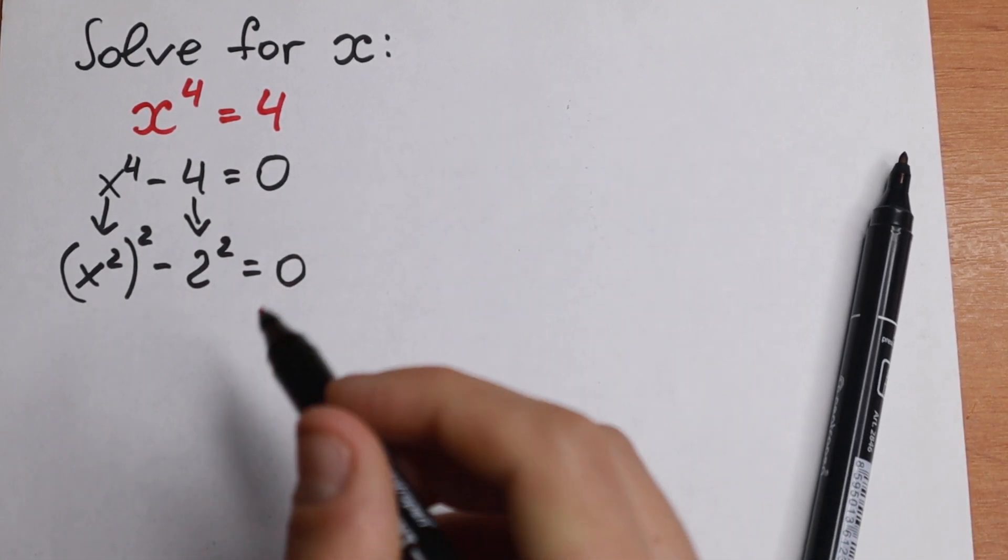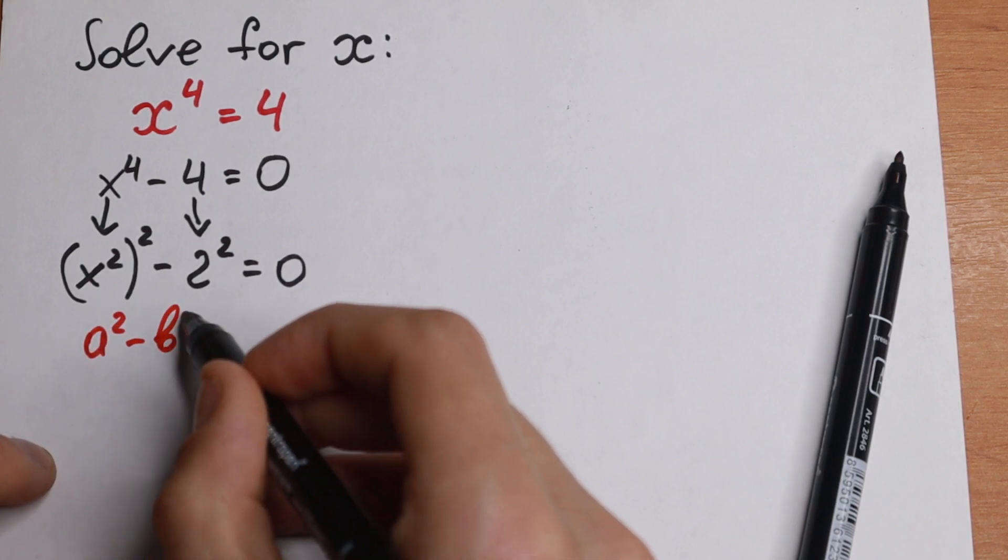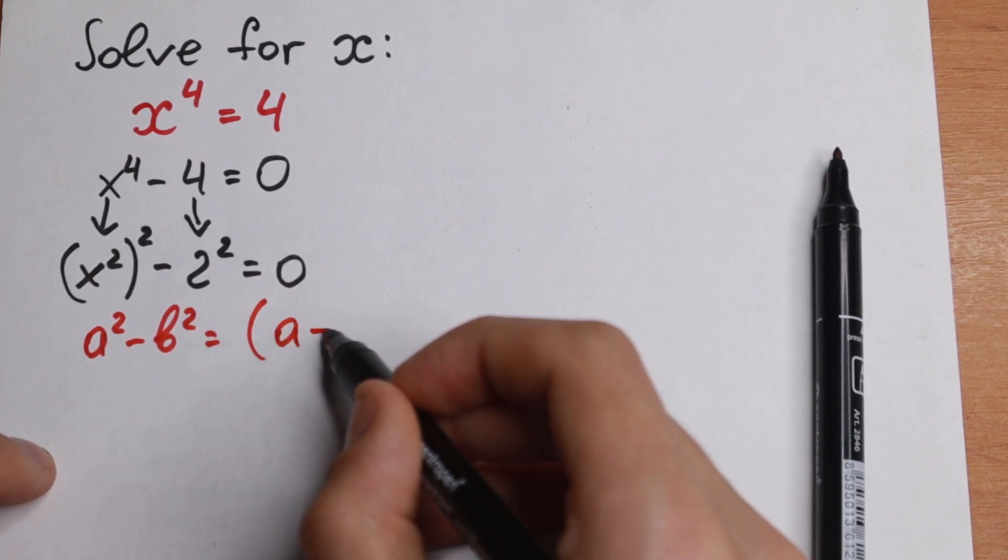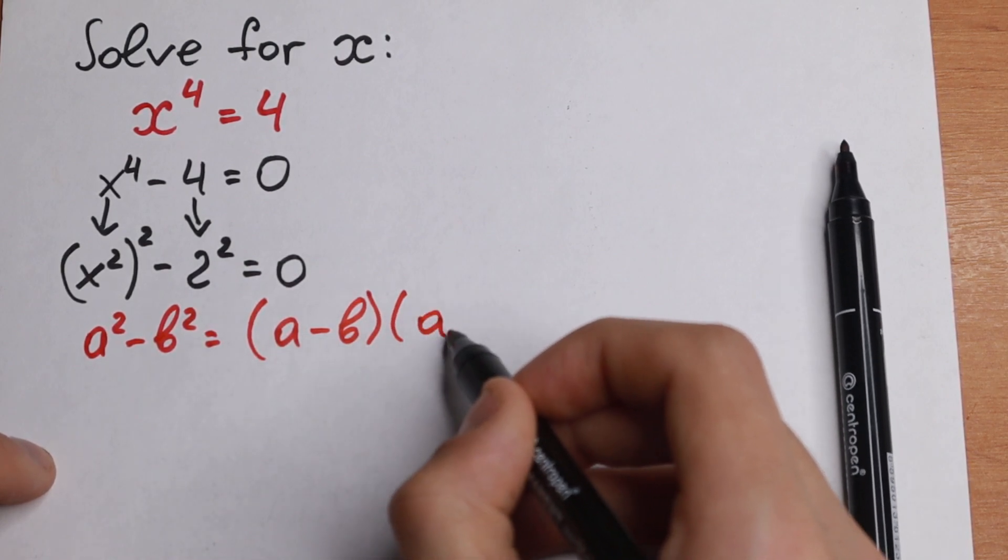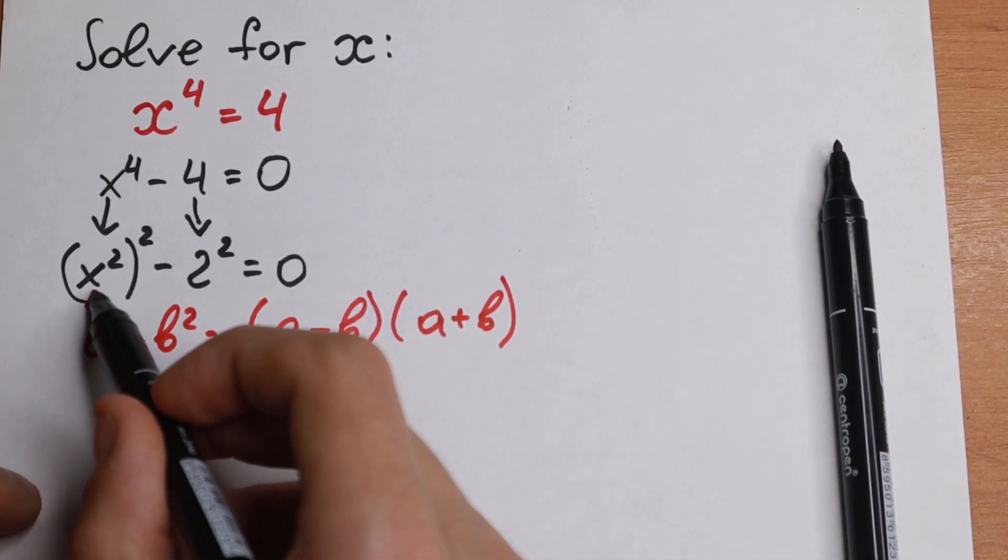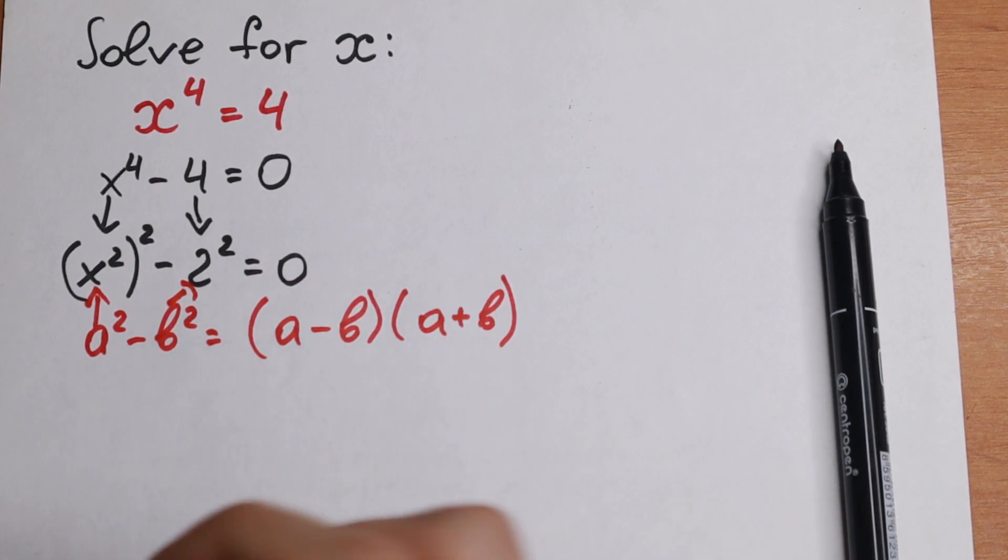But if you see closely we will have a squared minus b squared. We will have our formula, the difference of squares. As a result we will have a minus b times a plus b. So as you can see right here we will have a equals x squared and b equals 2. So let's use this formula.